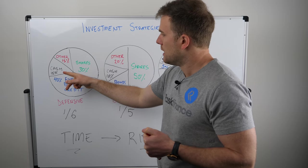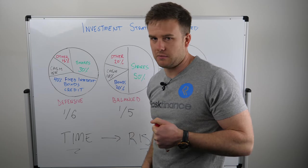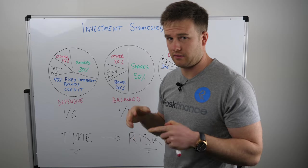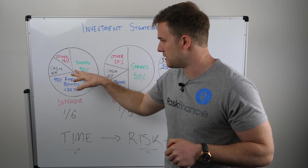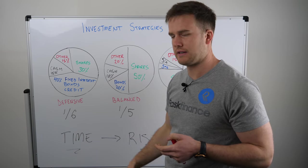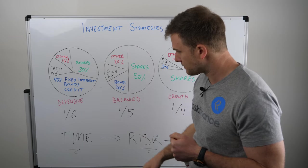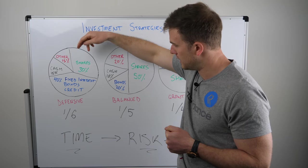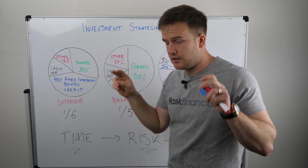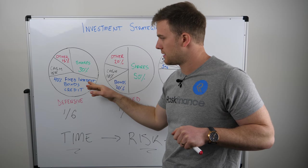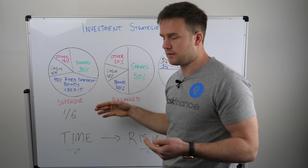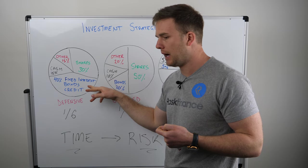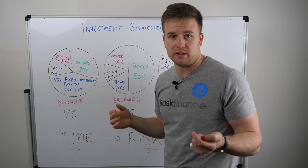You might have 15% in cash and then 15% in something else. That other section is a catch-all and includes things like infrastructure or alternative assets. In finance we call these different options asset classes — shares are one asset class, fixed interest is another, and so on. You can see from the pie chart that about a third is in shares, which are Australian or international. Shares are considered riskier, so in a defensive strategy you'd expect to see fewer shares than more conservative investments.